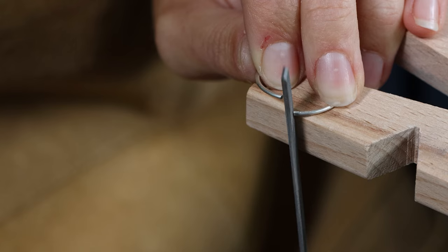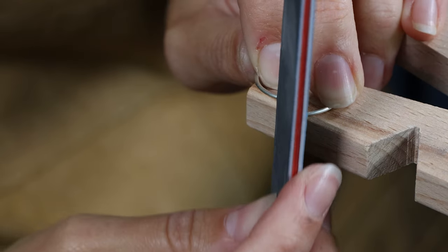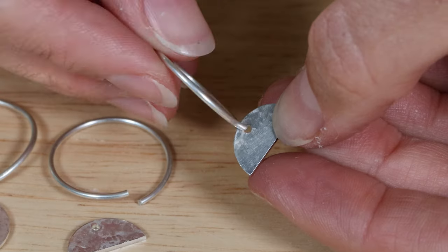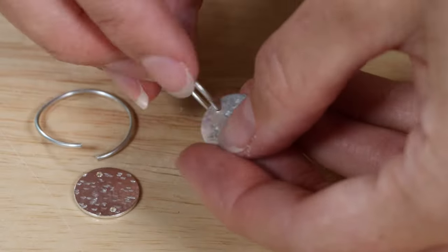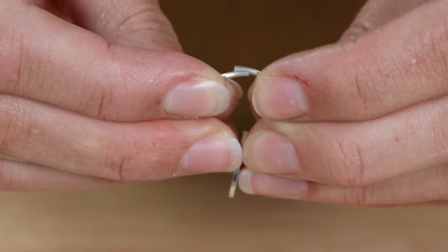Use an emery board to smooth the wire ends of your hoops. Thread a wire hoop through the hole of the semicircle disc. Gently manipulate the wire end of the hoop back and forth until they meet in the middle and sit flush.